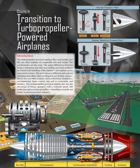Chapter 14: Transition to Turbopropeller-Powered Airplanes. Introduction. The turbopropeller-powered airplane flies and handles just like any other airplane of comparable size and weight. The aerodynamics are the same. The major differences between flying a turboprop and other non-turbine-powered airplanes are found in the handling of the airplane's power plant and its associated systems. The power plant is different and requires operating procedures that are unique to gas turbine engines.